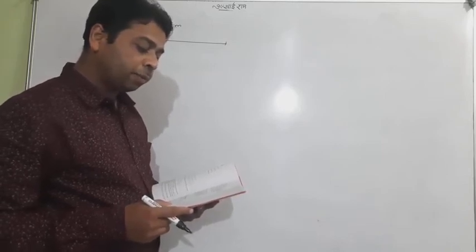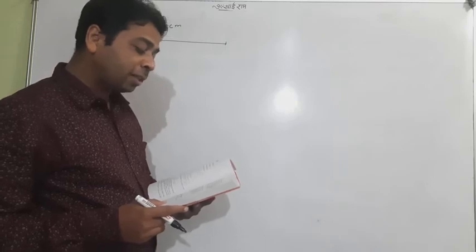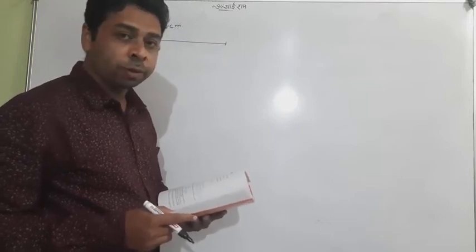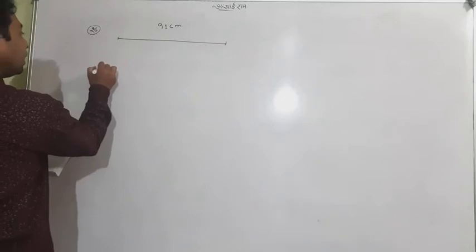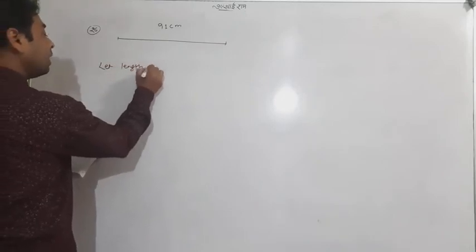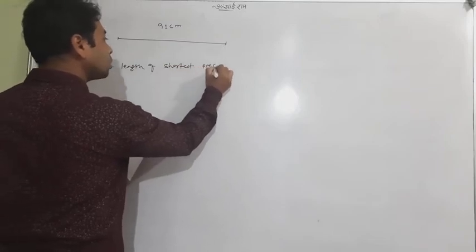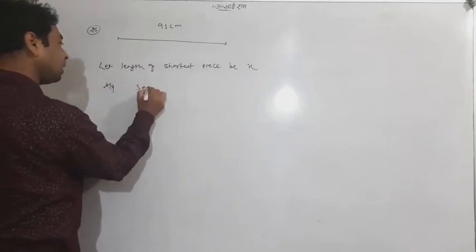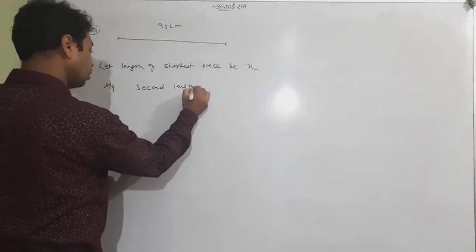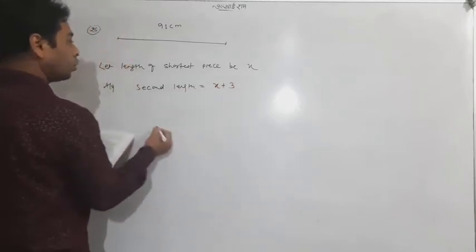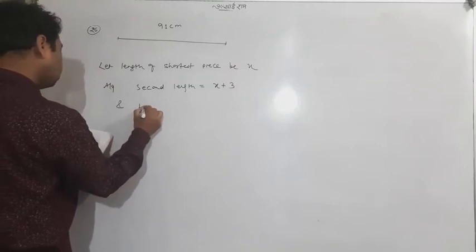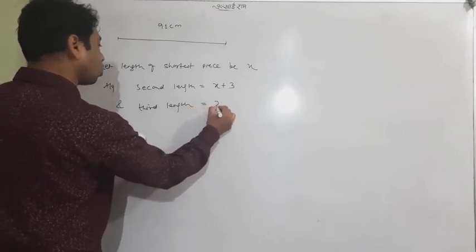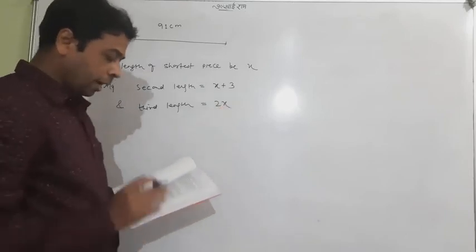The second length is to be three centimeters longer than the shortest one, and the third length is twice as long as the shortest one — both depend on the shortest one. Let the length of the shortest piece be x. Then the second length is x + 3 and the third length is 2x.